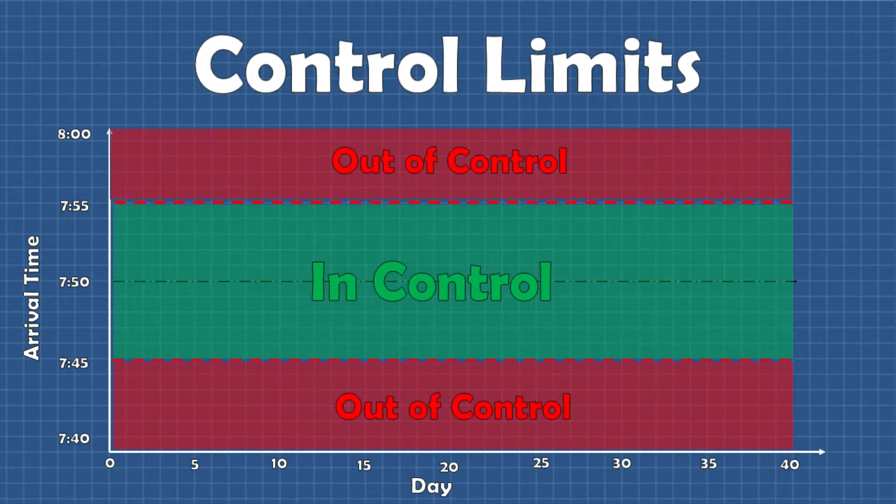For a process that is generally under control we can then say with some degree of confidence that if a data point falls outside these control limits then there must be some special cause driving that excess variation.